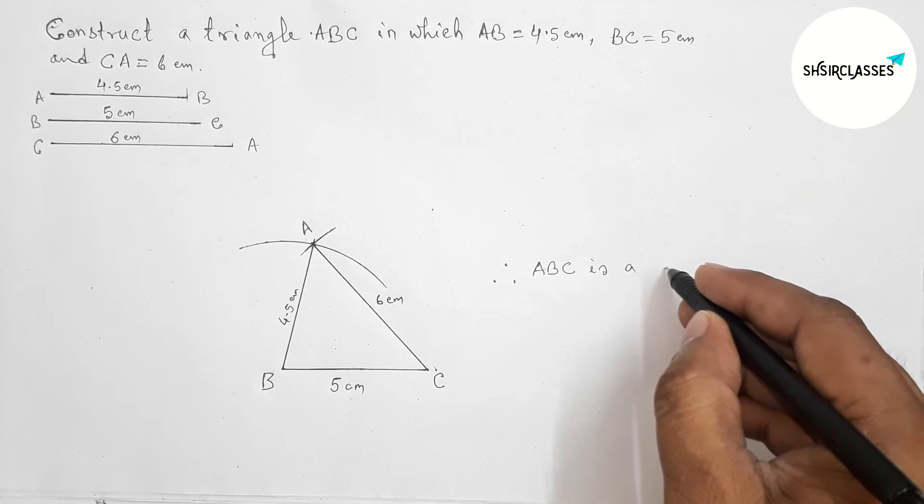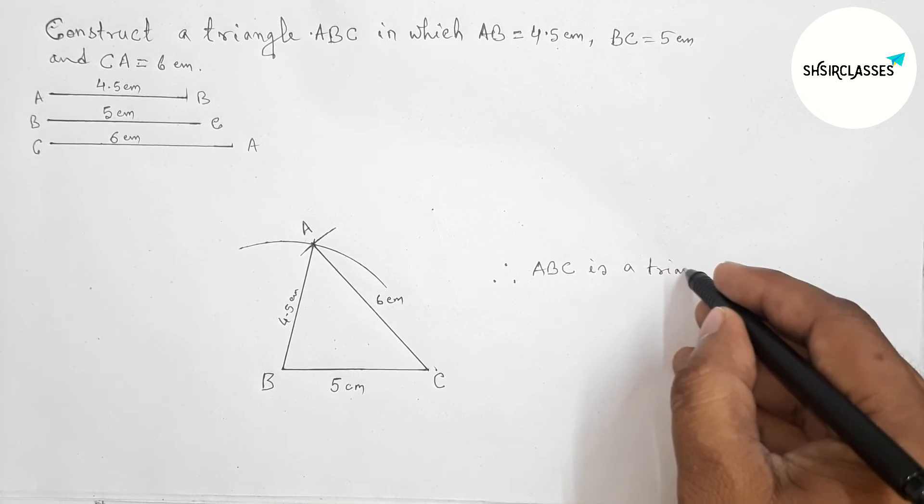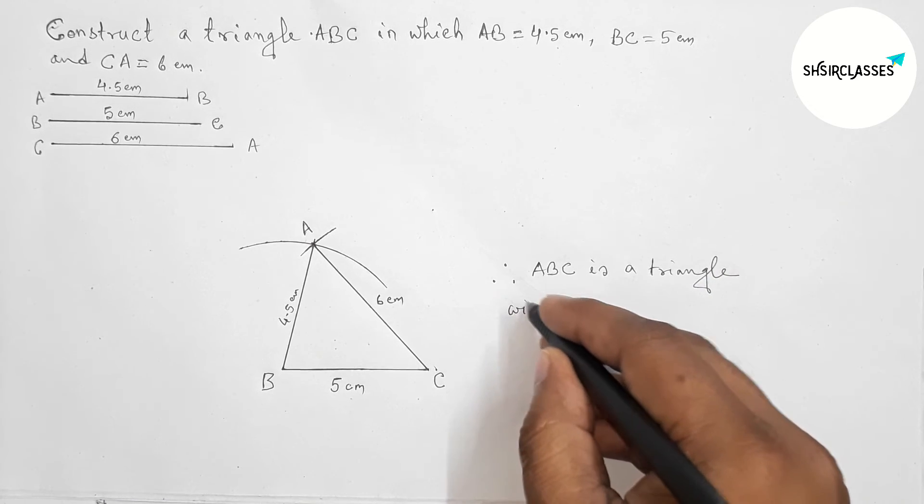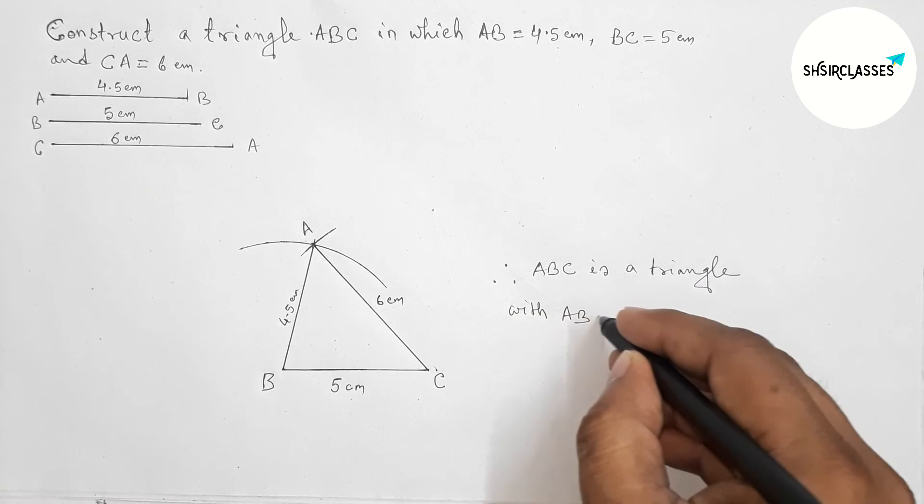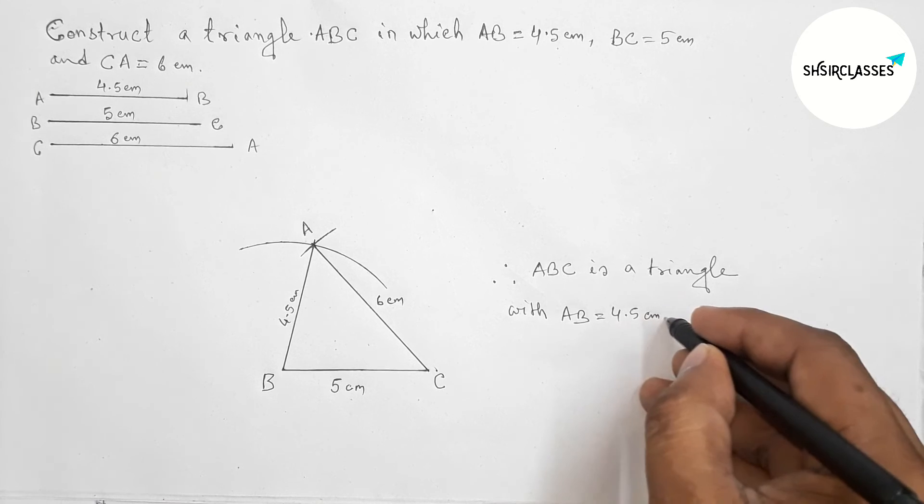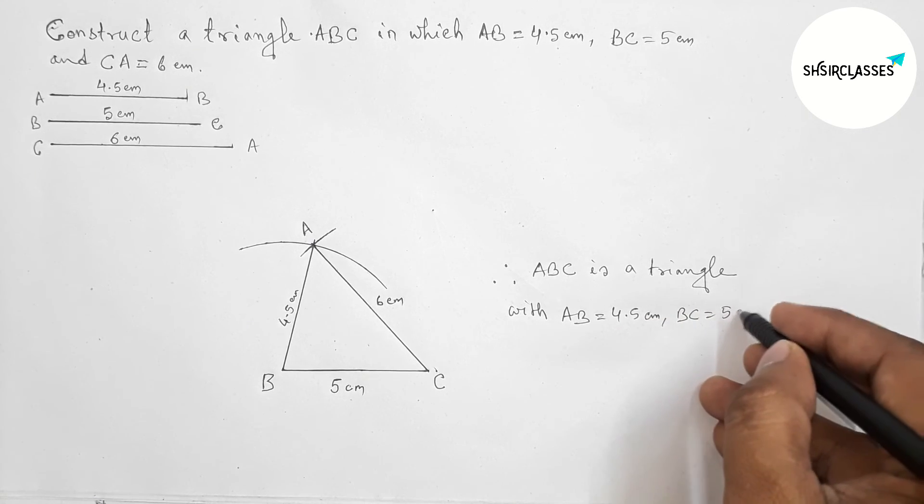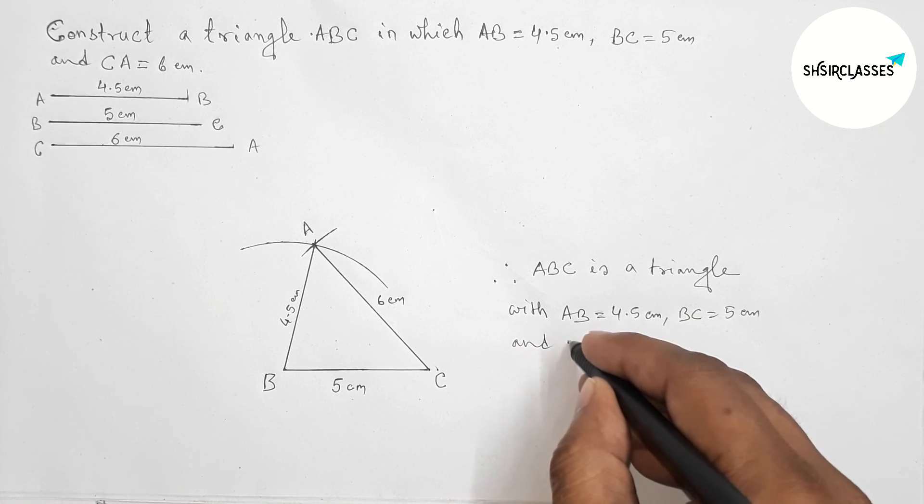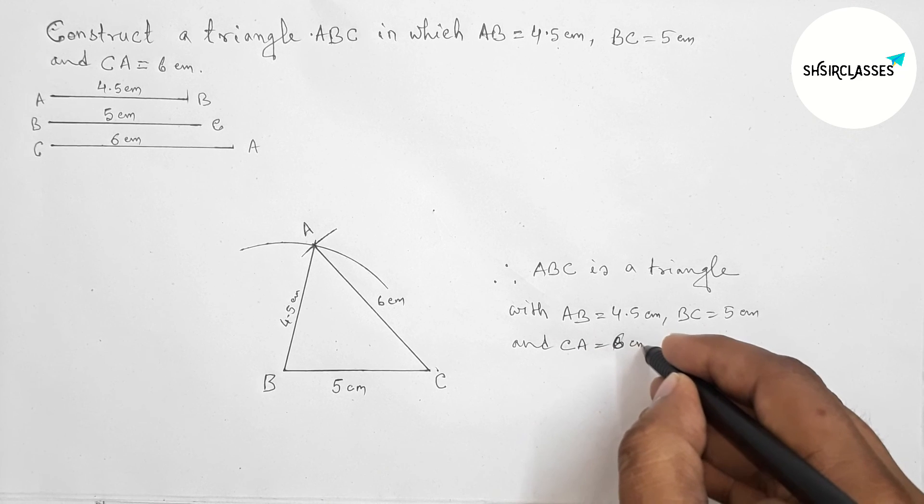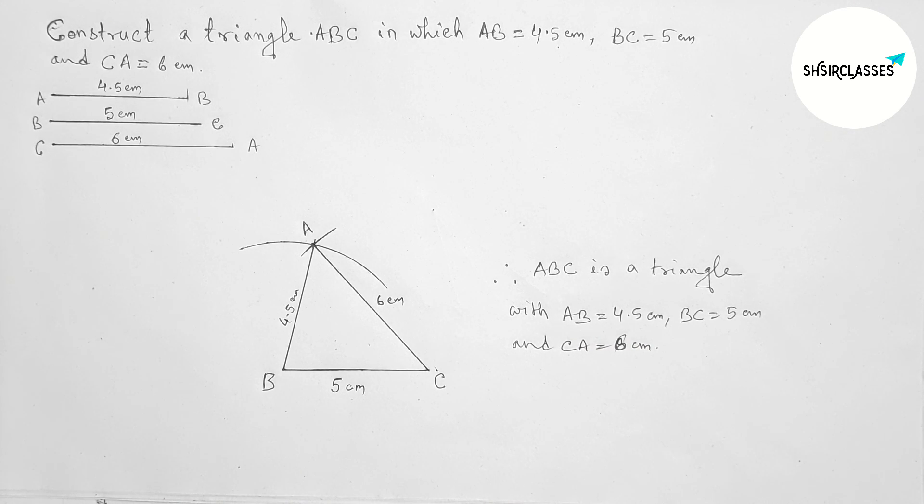Therefore, ABC is a triangle with AB equal to 4.5 centimeters, BC equal to 5 centimeters, and CA equal to 6 centimeters. So that's all. Thanks for watching.